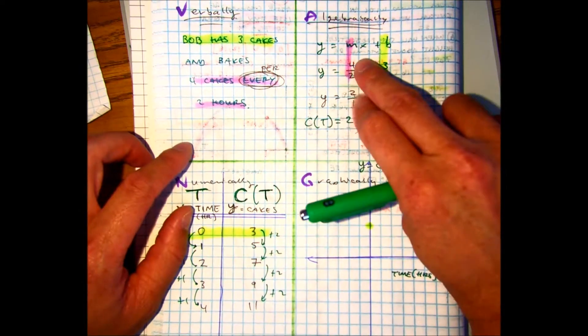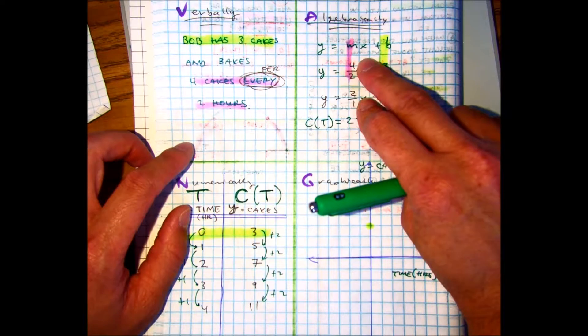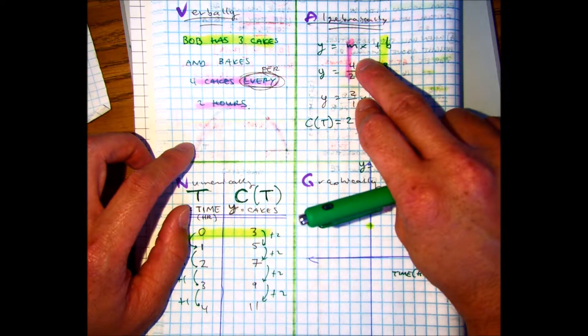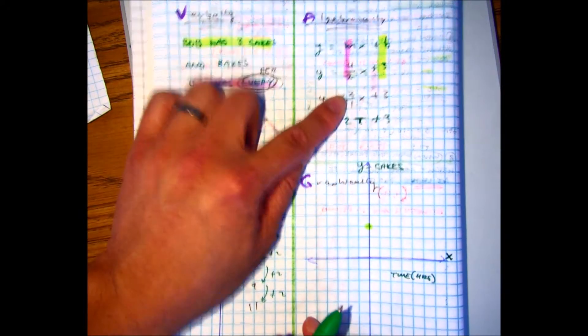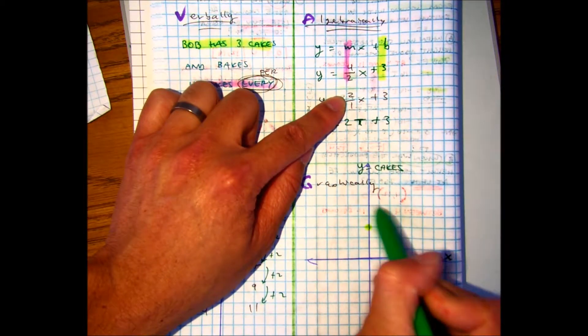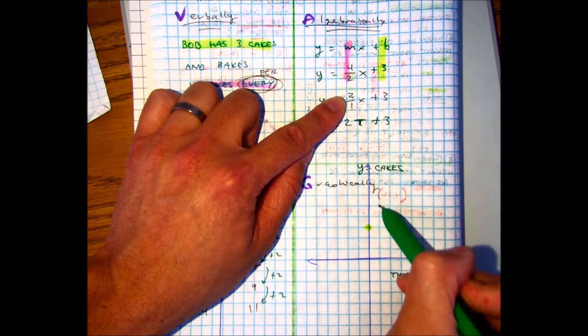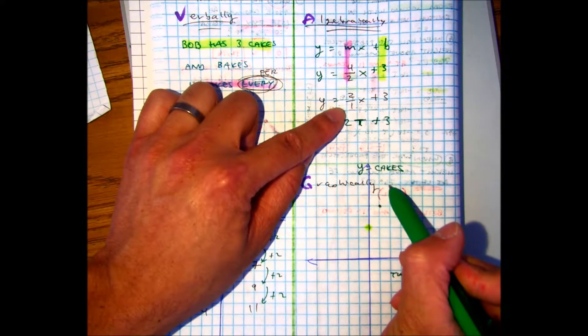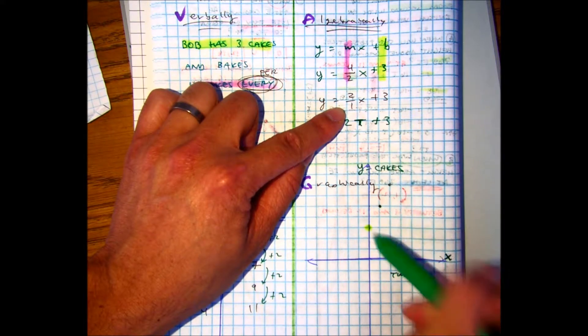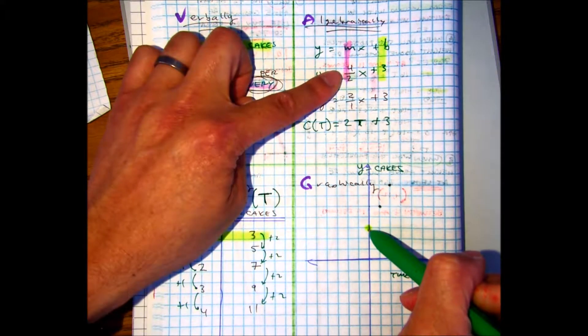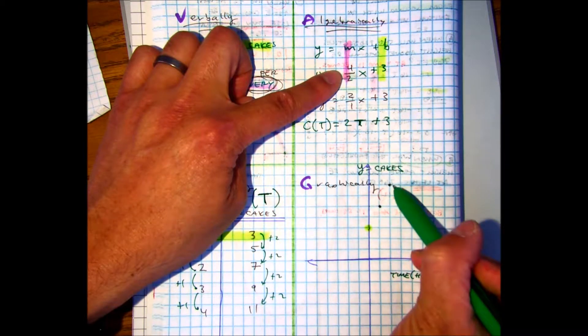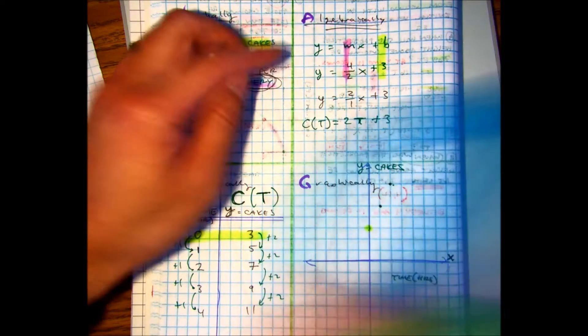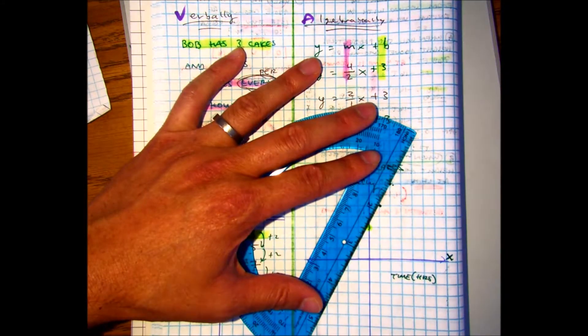Class, which slope should I use? Does it matter? No, it doesn't. Rise of two, run of one. From this point, rise of two, up two, run, positive one goes towards the right. And you'll notice that's the same as rise of four, one, two, three, four, run two. And now we have a line.